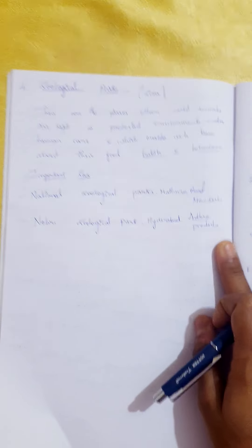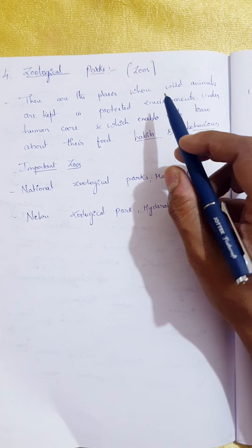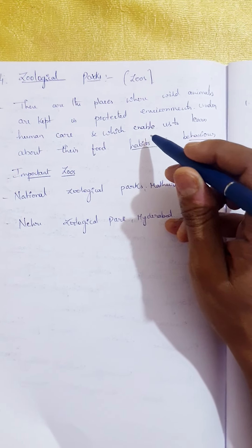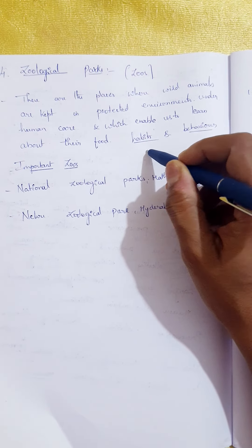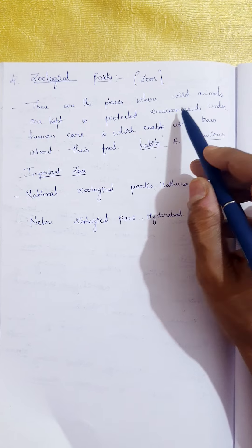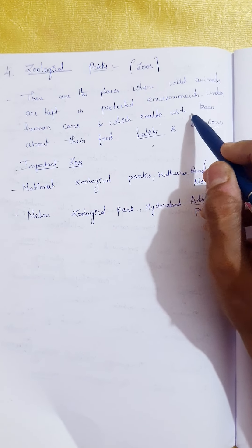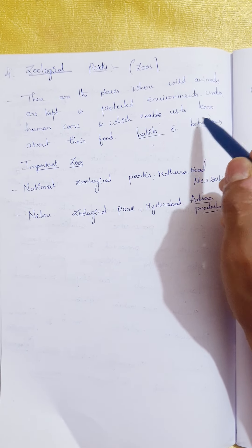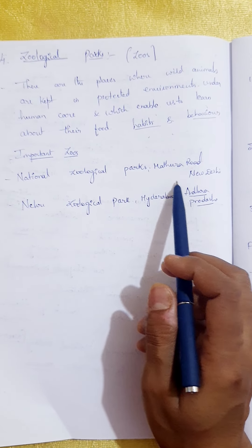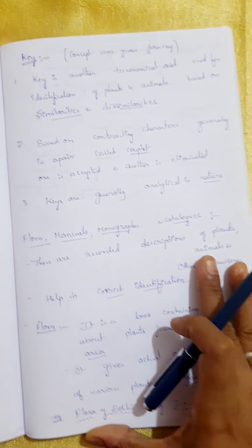Next, we have another taxonomical aid — zoological parks, commonly called zoos. Every child loves to visit zoos, especially to see beautiful animals, their nature, habitat, characteristics, and mode of food. These are places where wild animals are kept in a protected environment under human care, which enables us to learn about their food habits and behavior. Important zoos include the National Zoological Park in Mathura Road, New Delhi, and Nehru Zoological Park in Hyderabad, Andhra Pradesh.